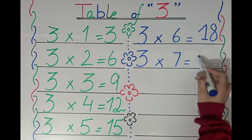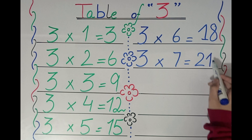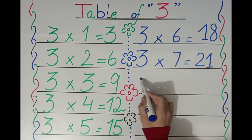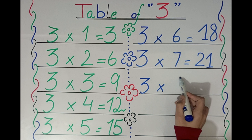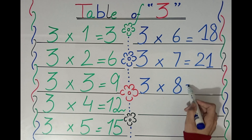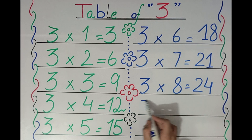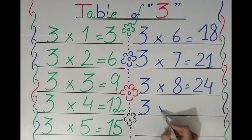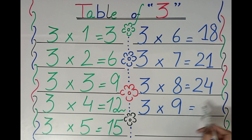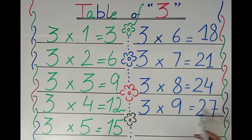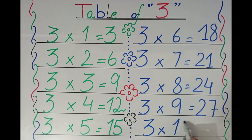Three sevens are twenty-one, three eights are twenty-four, three nines are twenty-seven, three tens are thirty.